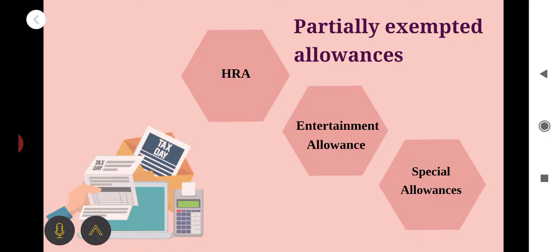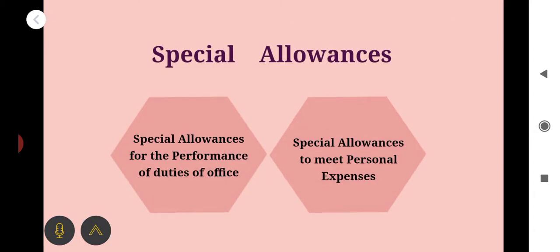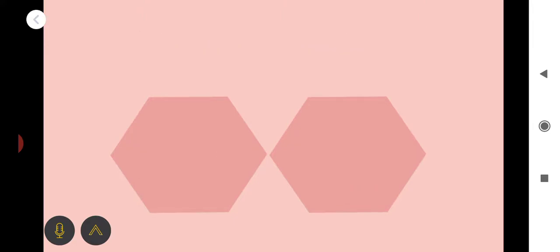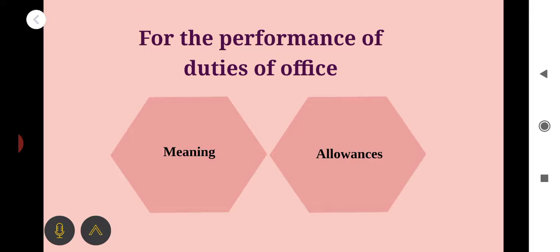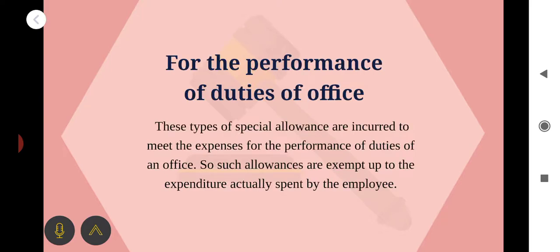Now let us see some special allowances. There are two types of special allowances: first, special allowances for the performance of duties of office; second, special allowances to meet personal expenses. The first type is of an official nature — these are incurred to meet expenses for the performance of duties of an office. Such allowances are exempted up to the expenditure actually spent by the employee. Whatever amount is spent for the performance of duties is considered the exempted portion, and the rest is taken as the taxable portion.